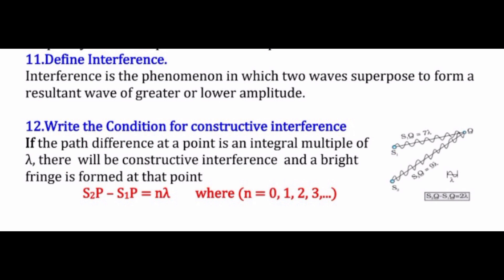The next question is: write the condition for constructive interference. There are two types of interference — constructive and destructive. In constructive interference we get maximum amplitude because two crests or two troughs meet at a point. The condition is that the path difference at a point must be an integral multiple of wavelength: S₂P − S₁P = nλ, where n = 0, 1, 2, 3... A bright fringe is formed at that point.